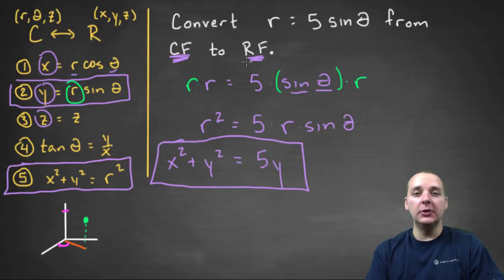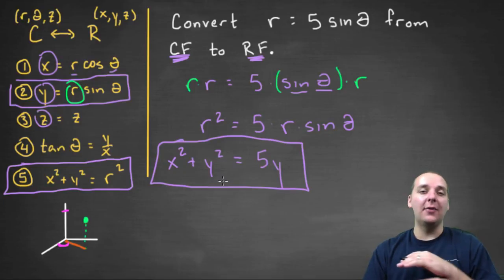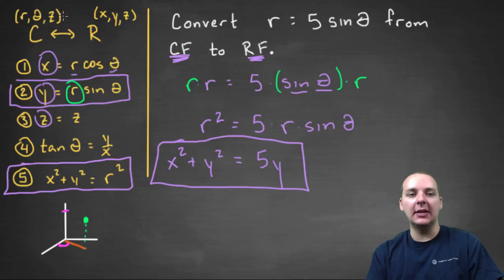If you're converting from cylindrical to rectangular, in your final answer you can have no r's and thetas. Z is fine, because z is actually in both forms, cylindrical and rectangular.